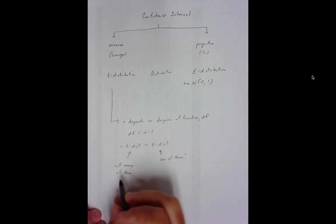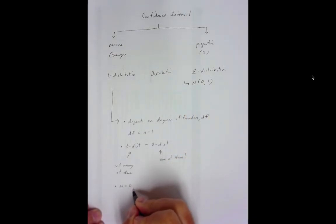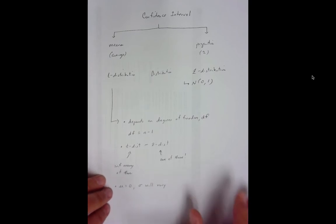One more thing about the T-distribution. The mean will always be equal to zero just like it is in the normal distribution. But the standard deviation will vary. And we never even worry about the standard deviation because the degrees of freedom take care of the variation for us.